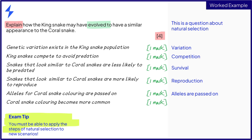Exam questions will often present you with an unfamiliar species to which you must be prepared to apply your knowledge of natural selection. You could perhaps use the first letters of the key words — V-C-S-R-A — to come up with a memory aid to help you remember the steps.